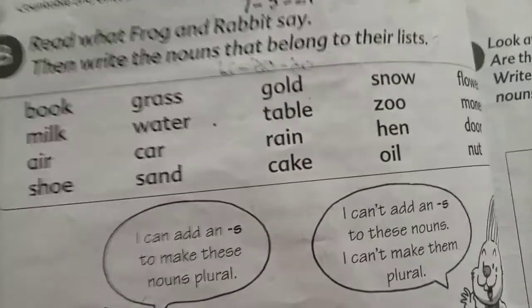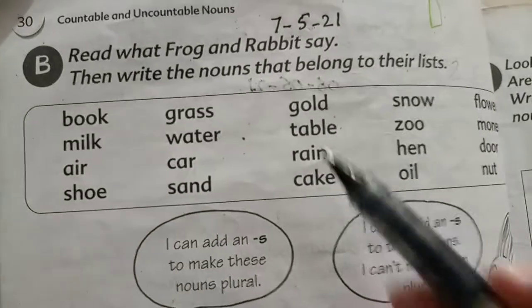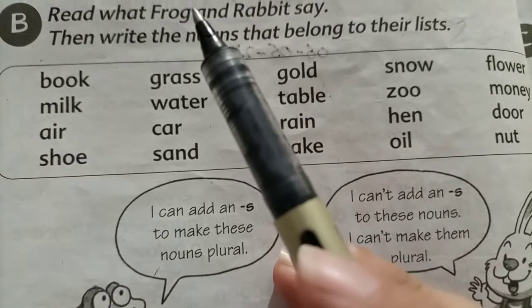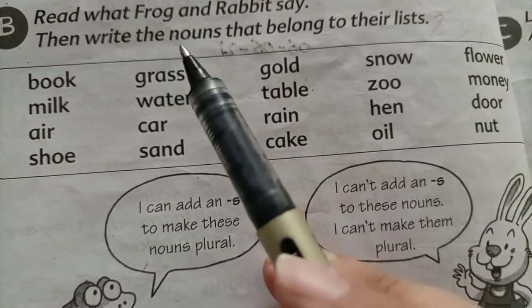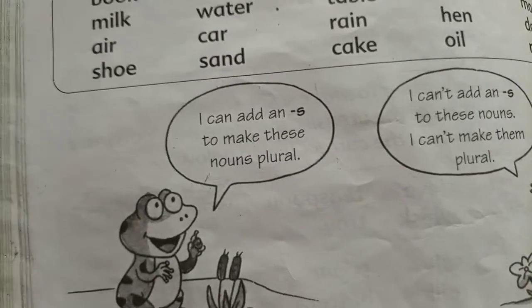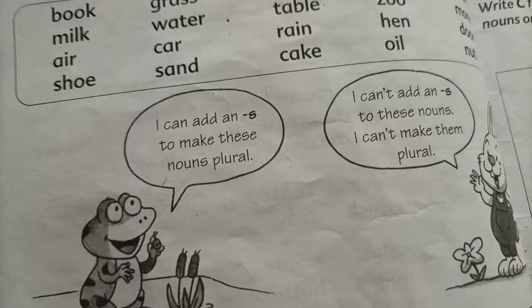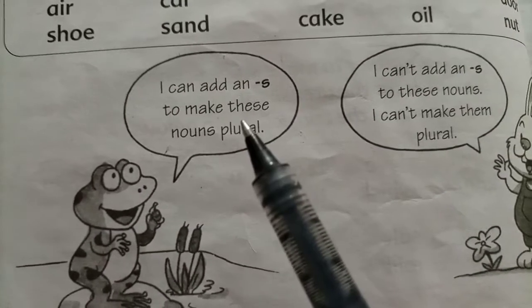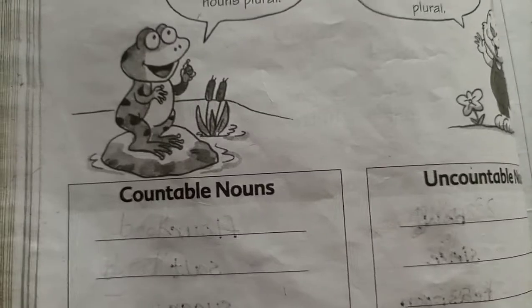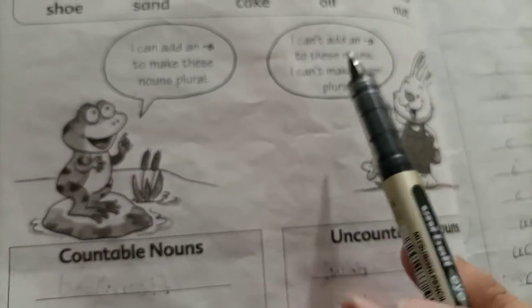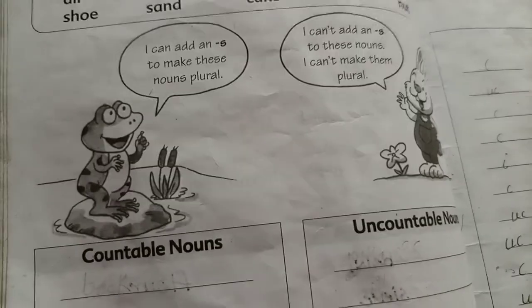Let's see what we have to do in this exercise. Read what frog and rabbit says. Then write the noun that belongs to their list, and you have to write these words in their respective list. Let's see what frog is telling us: I can add an S to make these nouns plural. But rabbit says: I can't add an S to these nouns.